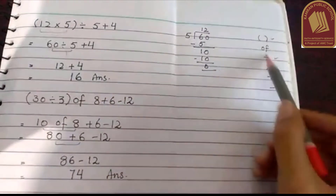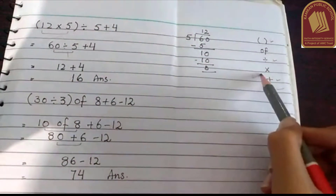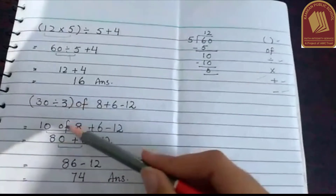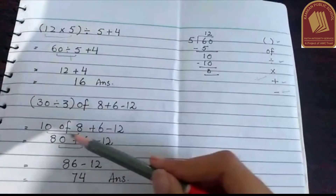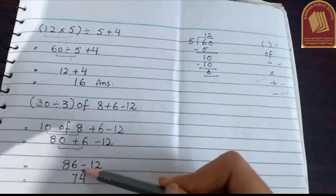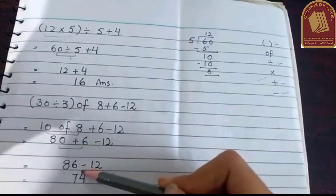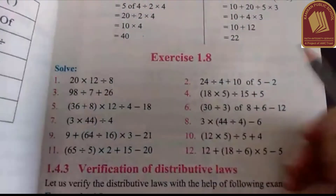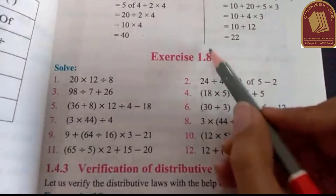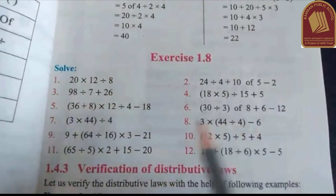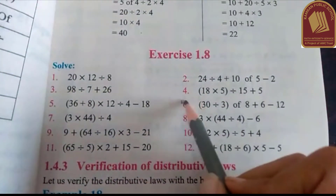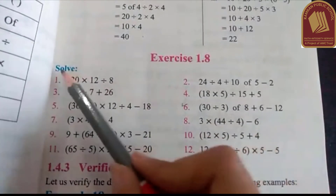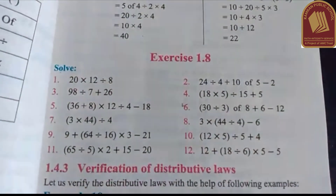So you have to apply this BODMAS rule. You have to solve the question step by step: first bracket, then of, then division, multiplication, addition, and subtraction. You have to solve this whole problem in your notebook.